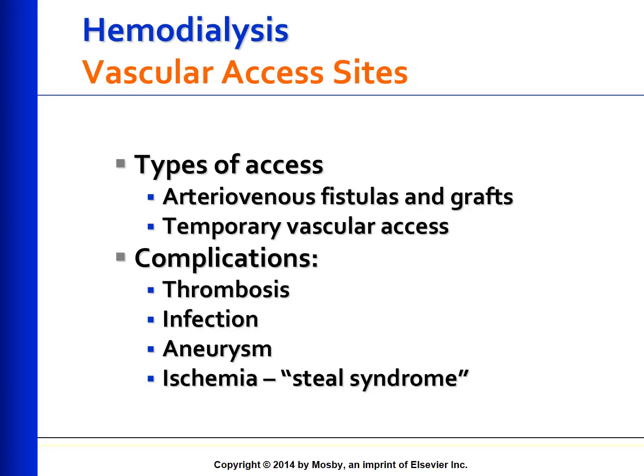Collateral circulation develops below the level of the fistula. Thrombosis or clotting of the AV access is the most frequent complication and may need TPA for declotting the access. Infections are introduced during cannulation, and sterile techniques should be used to prevent them. Aneurysms are caused by repeated needle punctures at the same site.